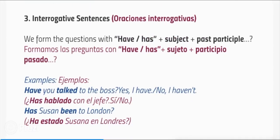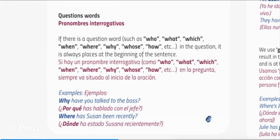Three: interrogative sentences. We form questions with have or has plus subject plus past participle. Examples: have you talked to the boss? Yes, I have, or no, I haven't. Has Susan been to London? If there is a question word — such as who, what, which, when, where, why, whose, how, etc. — in the question, it is always placed at the beginning of the sentence.